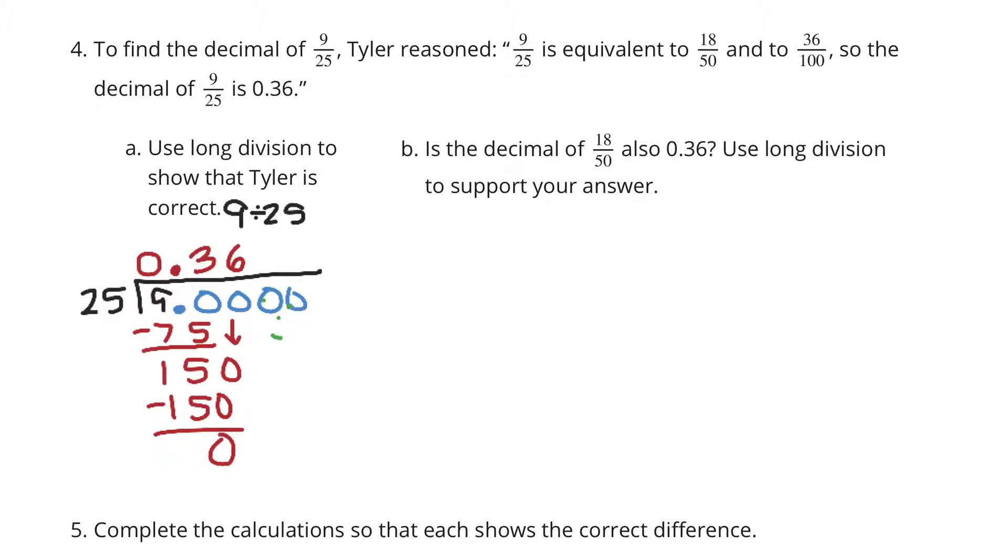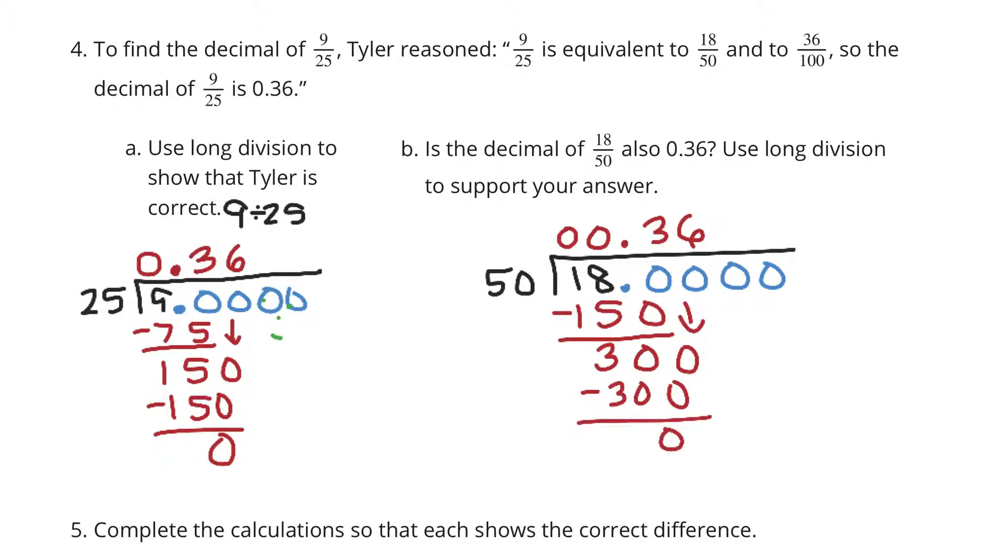Now our question becomes, is 18/50 also 36 hundredths? Use long division to support your answer. 50 does not go into the 1, does not go into the 18, but it does go into 180 about 3 times. 3 times 50 is 150. We're left with 30. Bring down the 0. And 50 goes into 300 exactly 6 times. We get 36 hundredths when we did 9 divided by 25, we get 36 hundredths when we do 18 divided by 50. And I'm sure if we set up 36 divided by 100, we would get 36 hundredths as well.